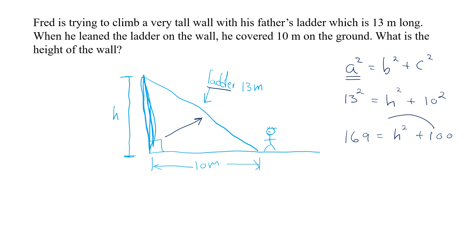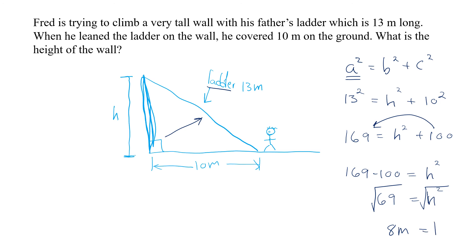Transposing the 100, we get 169 minus 100 equals h squared, which is 69 equals h squared. Finding the square root of both sides, the square root of 69 is approximately 8 meters. So our very tall wall is actually 8 meters — a beautiful question.